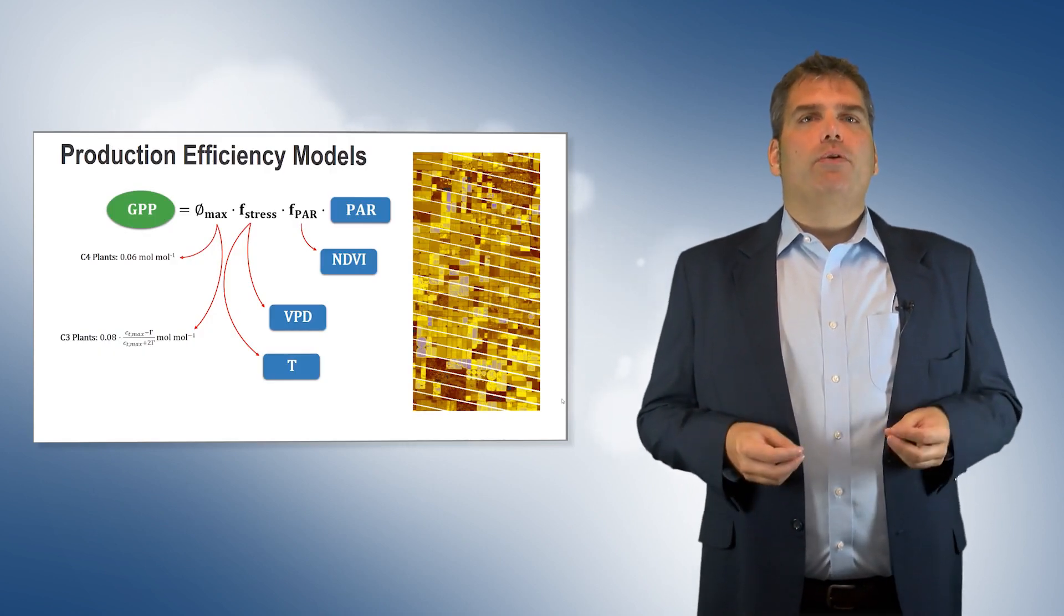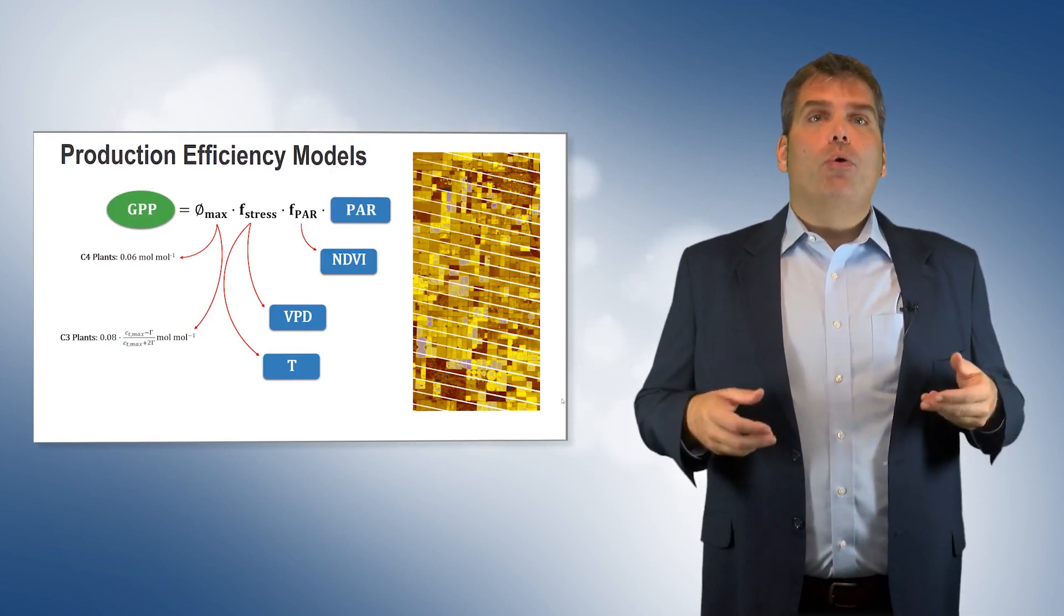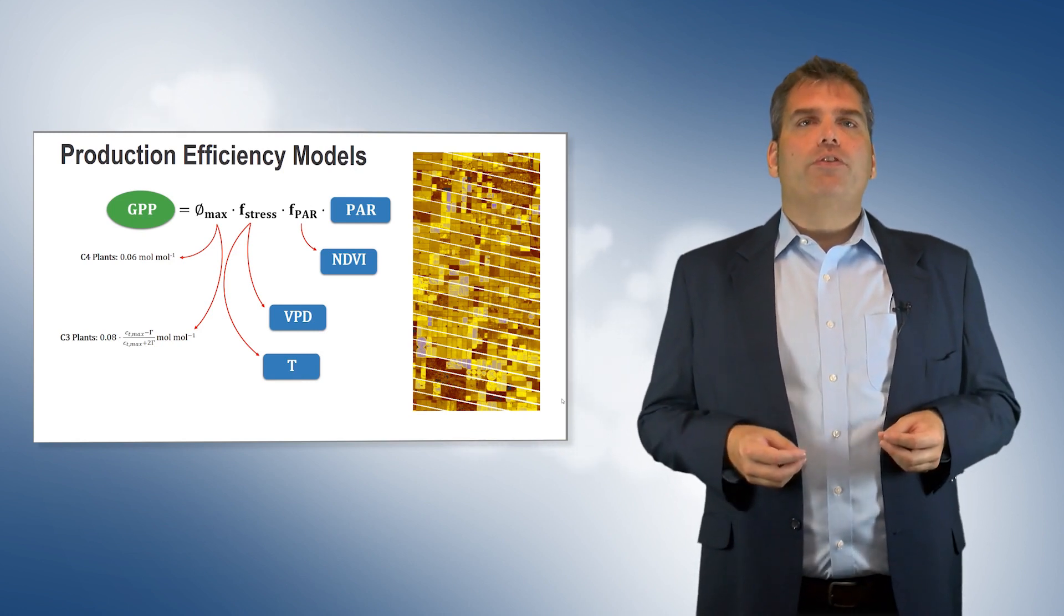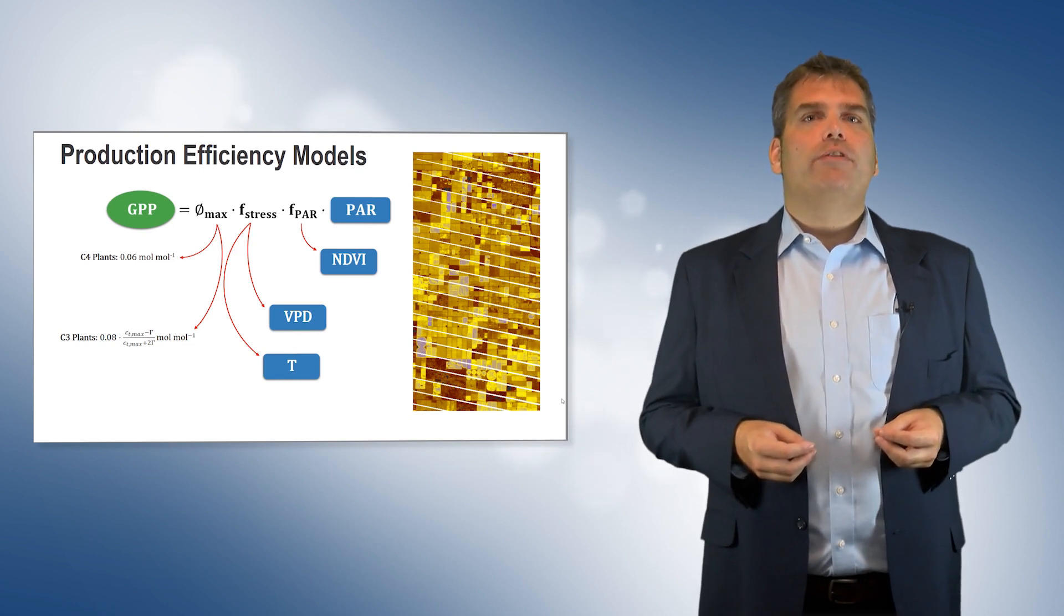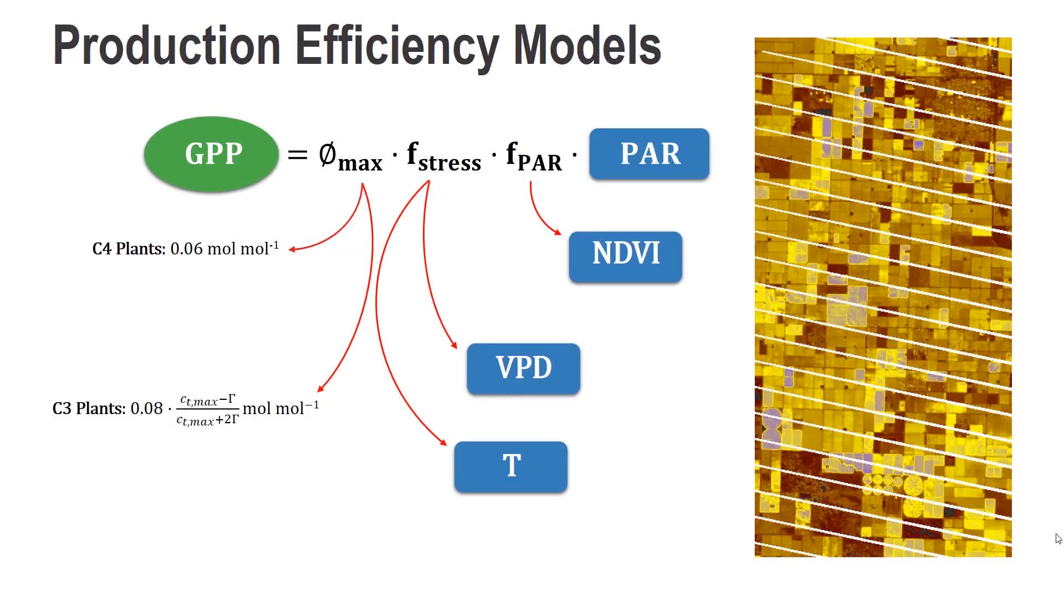Semi-empirical models, also known as light use or production efficiency models, consist of cost functions that regulate the amount of biomass generated by a crop during photosynthesis. The functions typically relate to quantum efficiency, or the ability of crops to convert CO2 into biomass, temperature, vapor pressure deficit, or relative humidity, and the amount of energy available from the sun, or photosynthetically active radiation, also known as PAR.